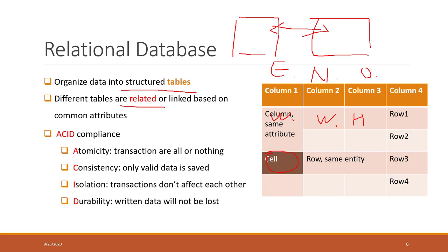A relational database has a very famous feature called ACID. ACID is a feature of the relational database, although other databases now also follow ACID standards — more and more types of databases now follow the ACID standards.